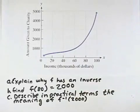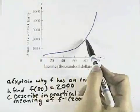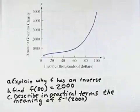From there, we want to describe in practical terms the meaning of f inverse of 2,000. Well, if inverse of 2,000 is going the other direction from 2,000, we'd be inversing back to 80. And so that means the income...